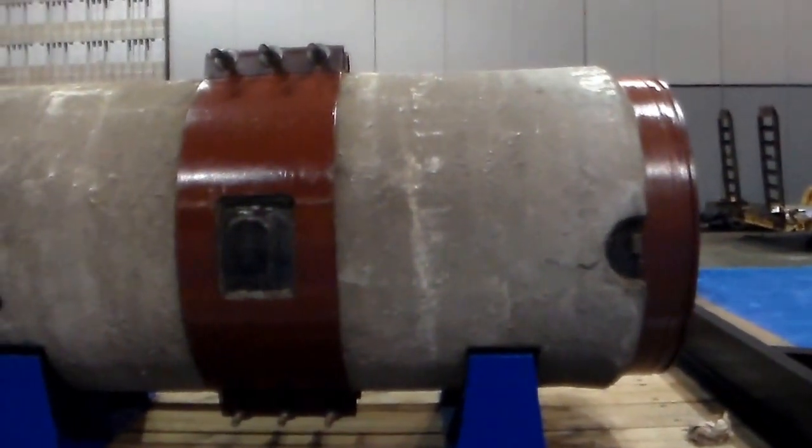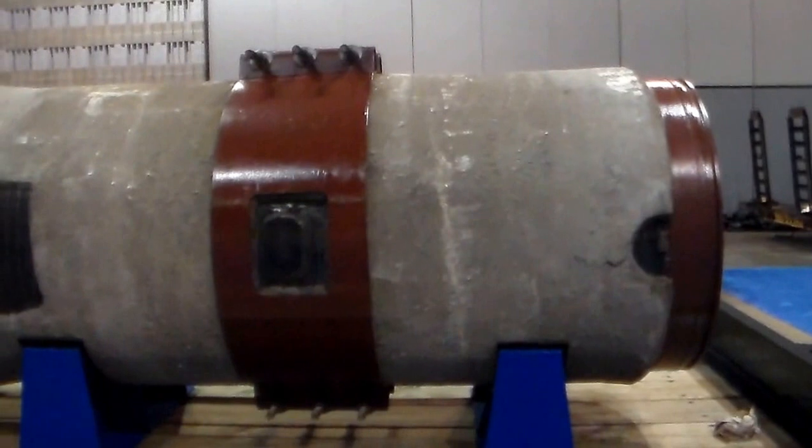What you're looking at is a 24-inch pre-stressed concrete cylinder pipe. This is the L design.